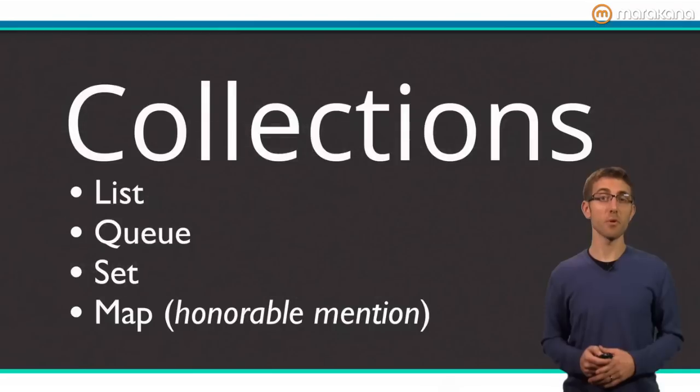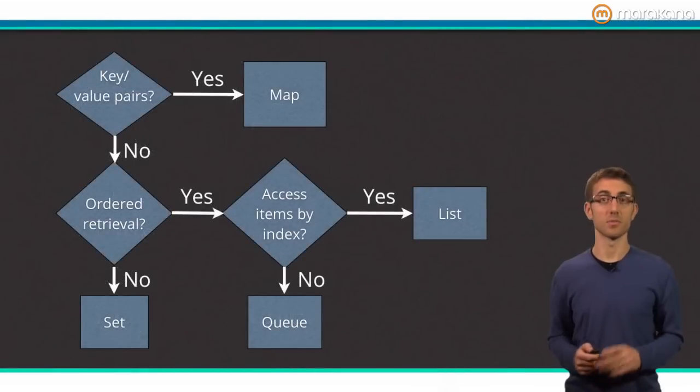Dart ships with four main collection types, lists, queues, sets, and maps as honorable mention. Each has their own trade-offs and optimizations. To help you keep them straight, here's a handy way to look at them. If you need key value pairs, there's one option, map. If you need to contain unique items, set is your only option.